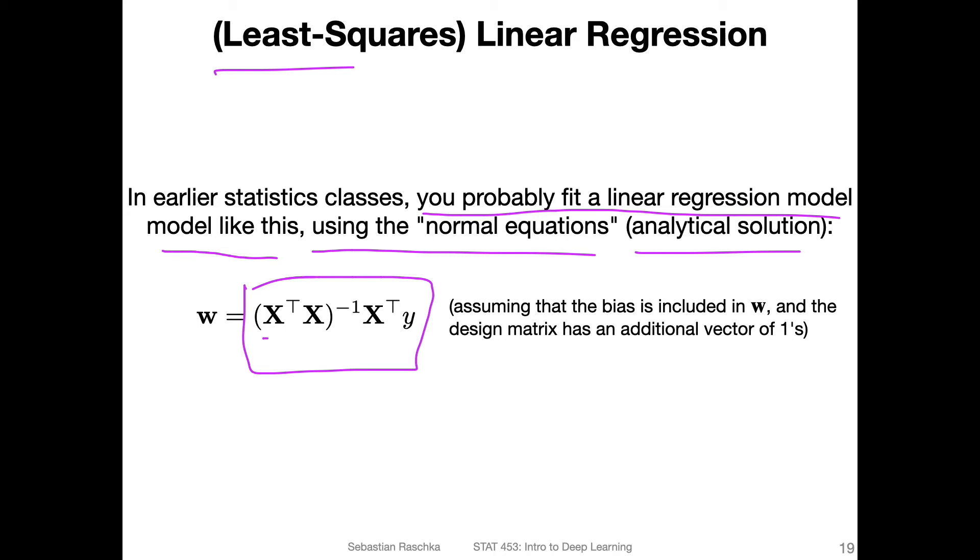You have X transpose X, inverted, times X transpose y. If you include an additional vector of ones, the bias unit is included in W, and the design matrix has an additional vector of ones.